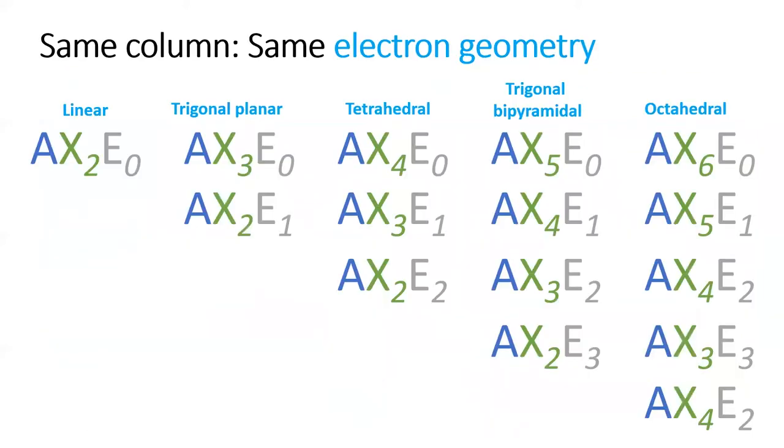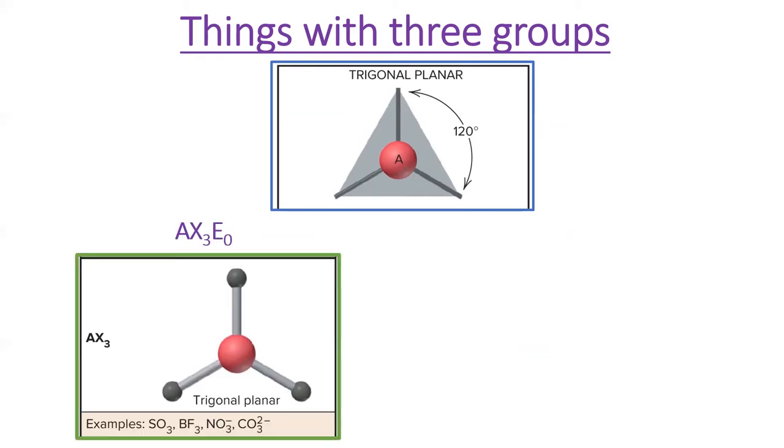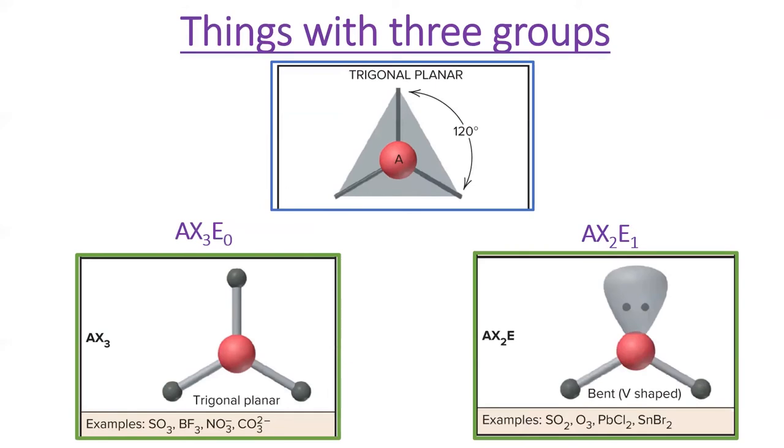We'll run through each AX combination here. But keep in mind that everything in the same column has the same electronic geometry, which we've already discussed the names of. So first things with three groups, the electronic geometry is trigonal planar. And when all three groups are atoms, the molecular geometry is also trigonal planar. But if we swap out an atom for a lone pair, we call the molecular geometry bent.